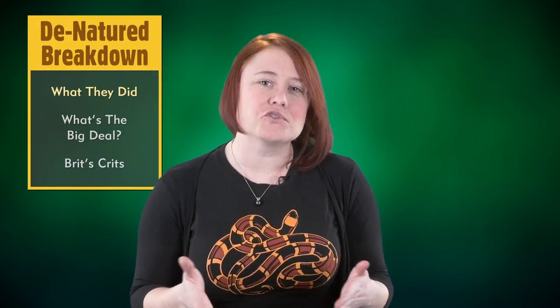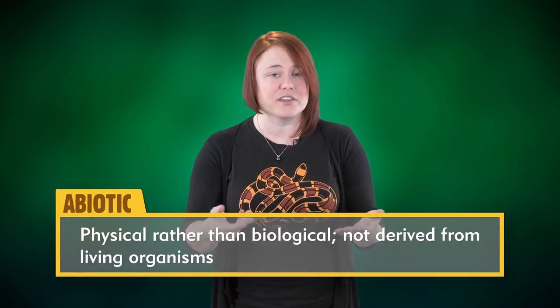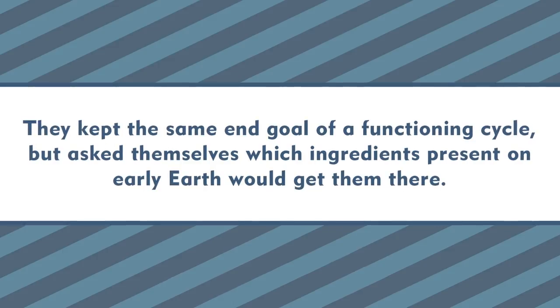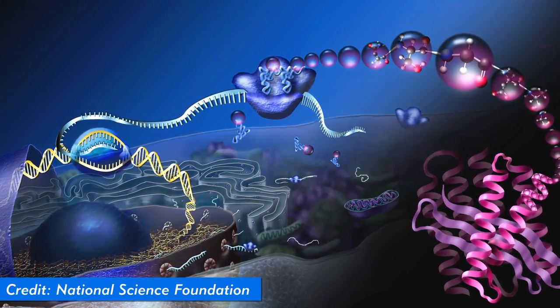In this new study, the researchers went in the opposite direction. Instead of trying to replicate modern biochemistry using the citric acid cycle, they used a bottom-up approach and started with several very simple abiotic, or non-living, molecules. In other words, they kept the same end goal of a functioning cycle but asked themselves which ingredients present on early Earth would get them there. Overall, the study found two linked abiotic cycles that not only produce carbon dioxide, but that generate stepping-stone molecules that appear in the modern citric acid cycle.